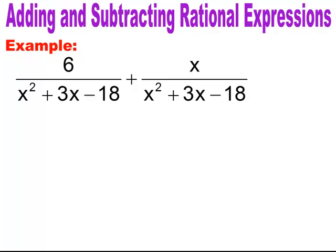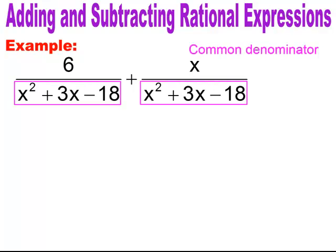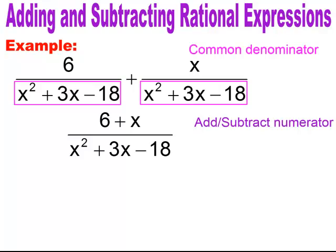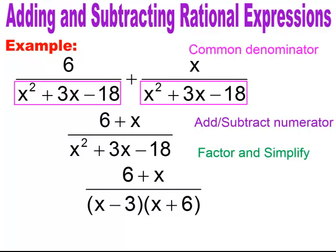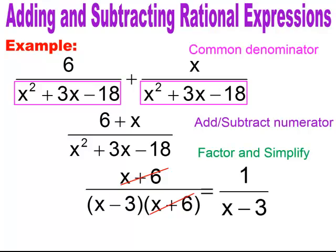In this next example, the common denominator is x squared plus 3x minus 18. I add the numerators and get 6 plus x, all over x squared plus 3x minus 18. Now I need to factor and simplify. The trinomial on the bottom factors to (x minus 3)(x plus 6). The numerator 6 plus x can be rewritten as x plus 6, so I can cancel the common factor and I'm left with 1 over x minus 3. The canceled factor leaves 1 on top.